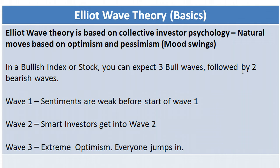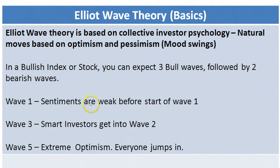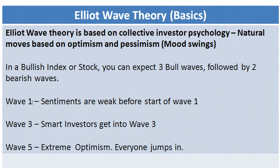Typically, Wave 1 is the first bullish wave — Wave 2 is a short correction after Wave 1. Before Wave 1 gets started, sentiments are normally weak. Most likely Wave 1 is created by value investors who try to find the bottom in the stock market — people doing value investing or buying on dips. When there is news assisting a reversal, Wave 1 is generated. It's tough to predict Wave 1, and it's mostly not advisable to always try looking for it.